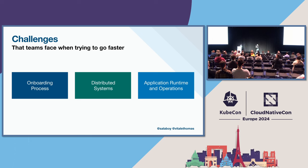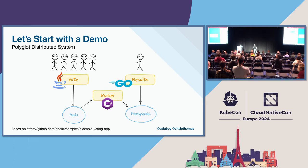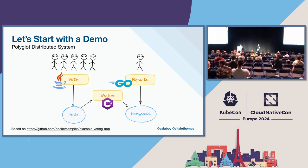Let's take a look at how the application works. It's pretty simple — you can cast votes and see the results changing. We want to show a simple application working, and also the architecture around that application. We'll use this to exemplify the challenges we mentioned: the onboarding side, the distributed system patterns and tools, and the operational side.